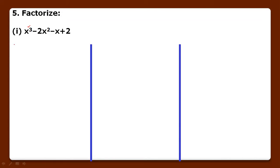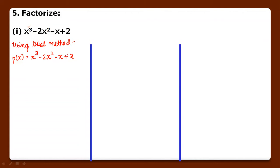Let's start from the very first step using the trial method. We are given a polynomial P(x) = x cube minus 2x square minus x plus 2. Now we will see how many factors of the constant term are possible: plus minus 1, plus minus 2. These four are the possible factors.